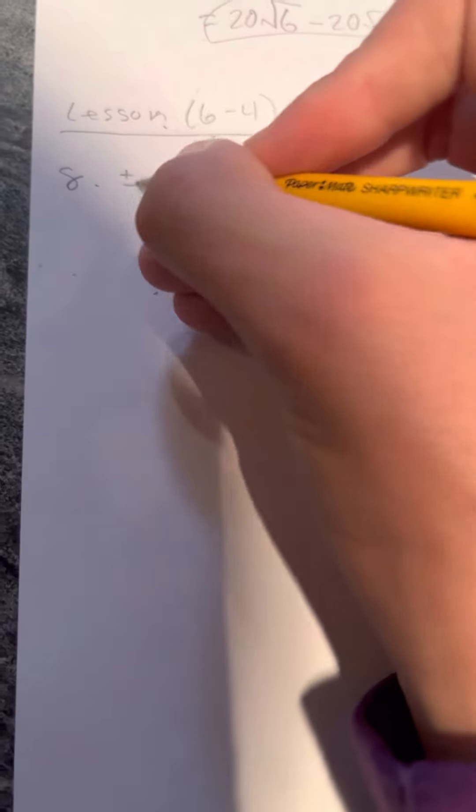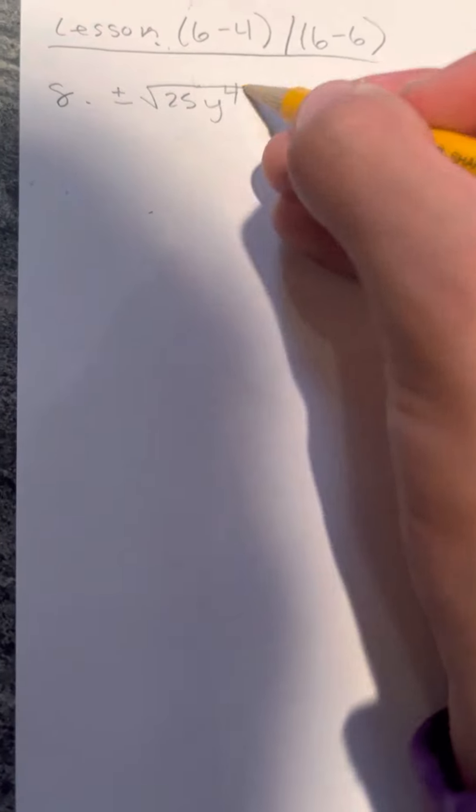Problem number 8: simplify. 25 is a perfect square, and the square root of 25 is 5, so it equals plus or minus 5. The square root of y to the fourth is y squared. So that would be your answer.